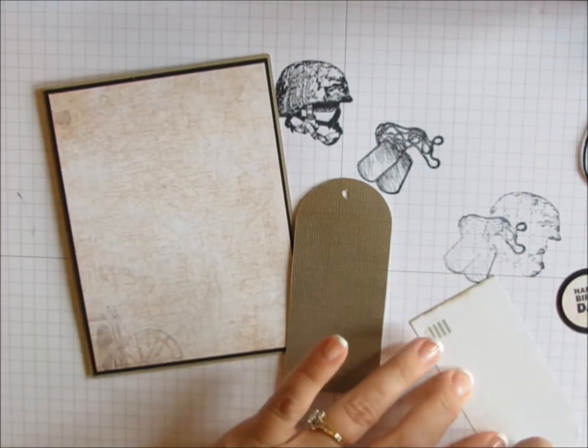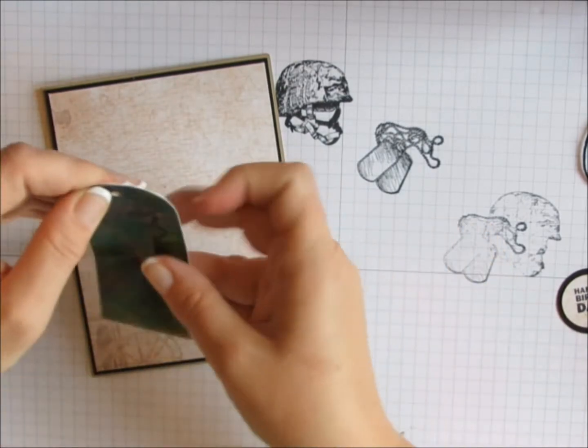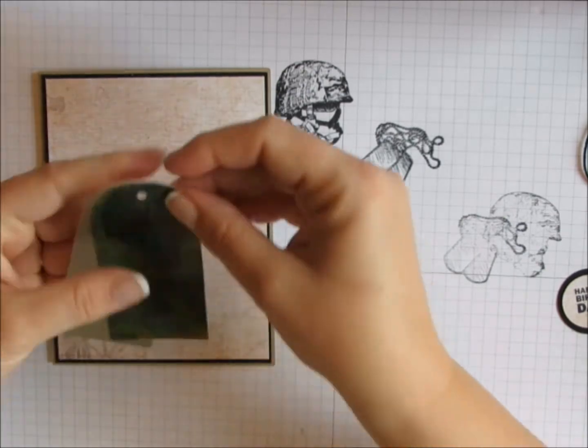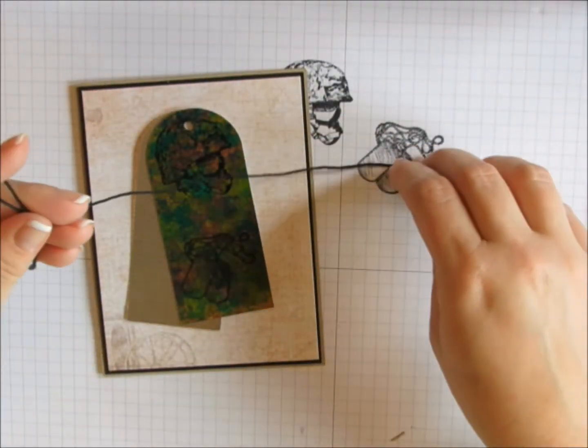My dog tags are going to be popped up with dimensionals, but first I wanted to stick them together so that they have the correct angle and they wouldn't just flop down into one piece. So I just put some Fast Fuse on one side of my camouflage paper.